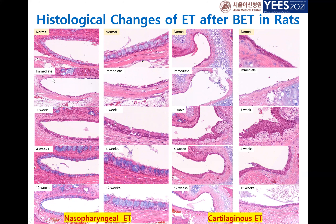Immediately after dilation, the mucosa was lost and there was damage. However, after four weeks the mucosa was well preserved and goblet cells were easily seen.